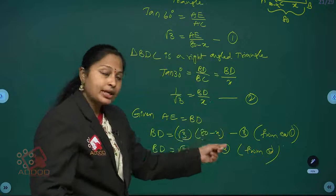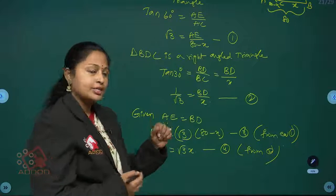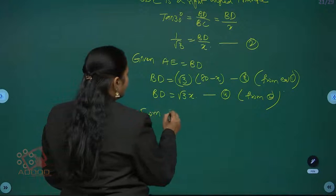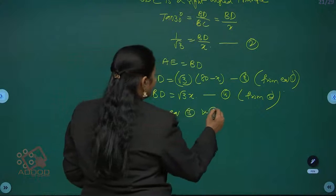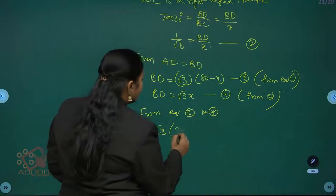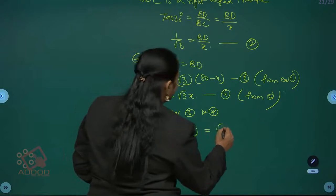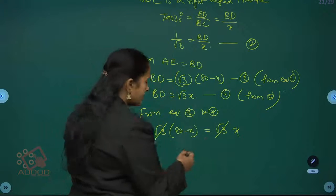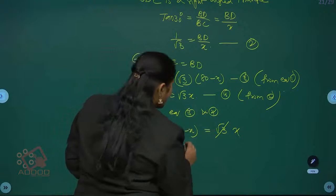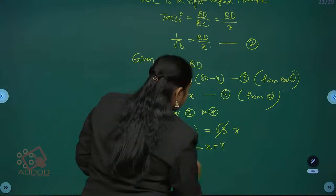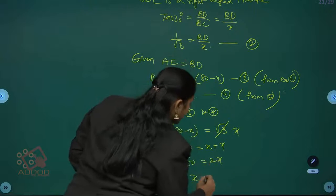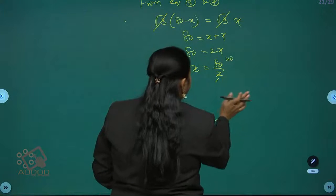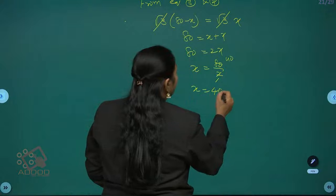Observing equations 3 and 4, the LHS parts are equal, so let's equate the RHS parts. Root 3 into (80 minus x) equals root 3 into x. Root 3 gets cancelled; transposing minus x from LHS to RHS gives 80 equals x plus x, so 80 equals 2x, therefore x equals 80 by 2, which is 40 meters. Therefore x equals 40 meters.